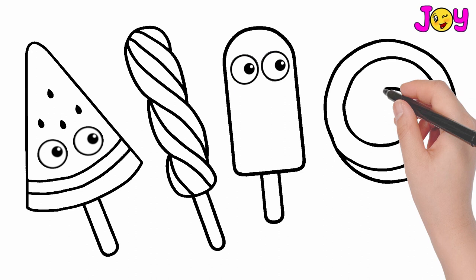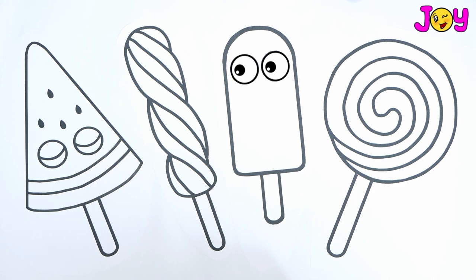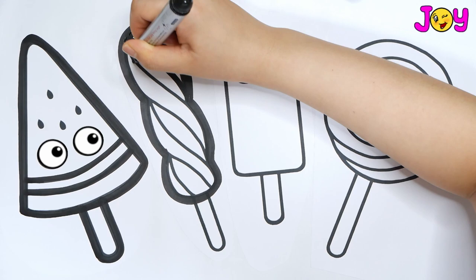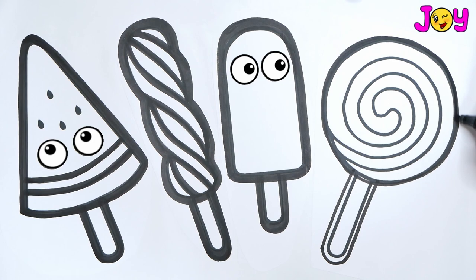When it comes to ice cream, they are even better! Wow! We have four different types of popsicles: a watermelon popsicle, a twisted popsicle, a rainbow popsicle, and a lollipop popsicle. Let's paint red.